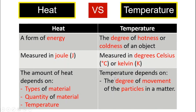And let's look at the next point. The amount of heat depends on the types of materials, quantity of material, and also temperature. How about temperature? Temperature actually depends on the degree of movement of the particles in the matter.